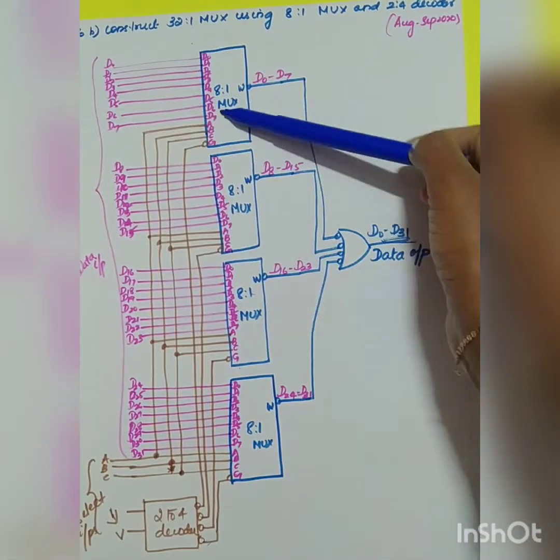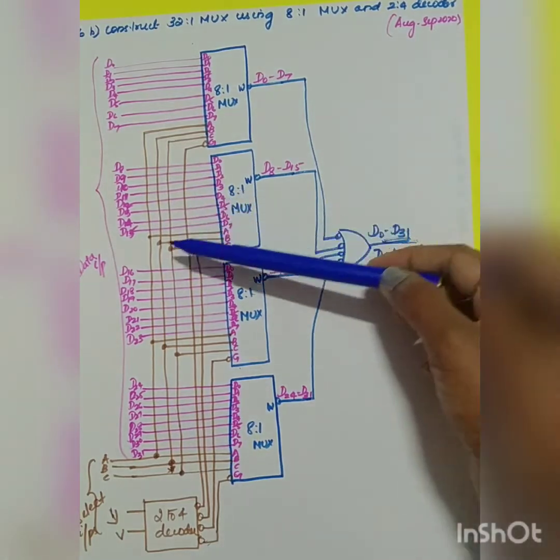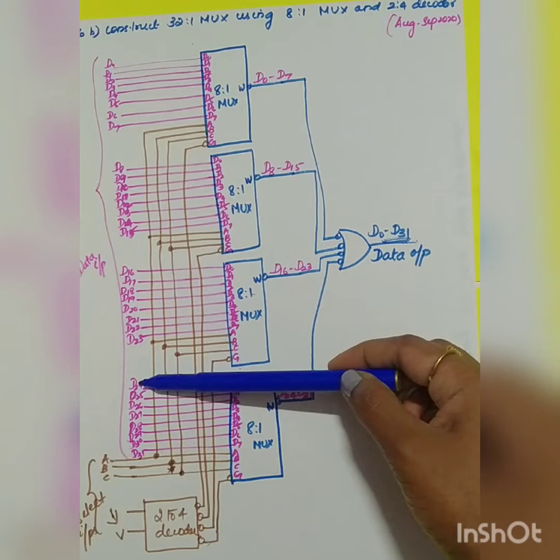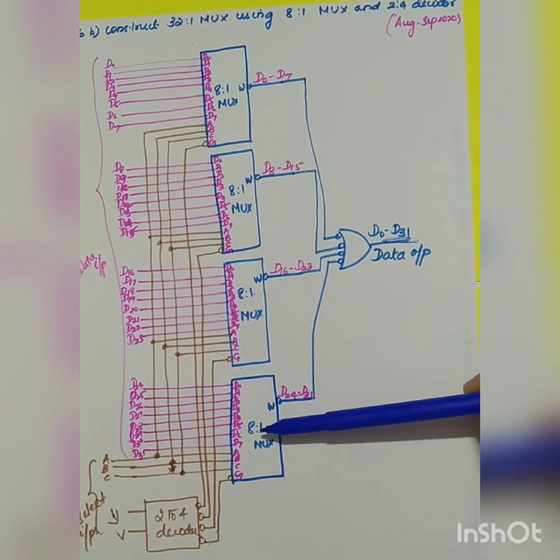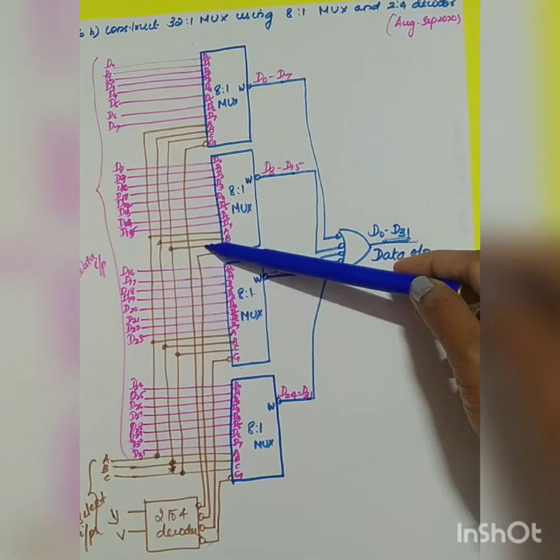d8 to d15 will be your data input to the second MUX, d16 to d23 will be the data input to the third MUX, and d24 to d31 will be the data input to the fourth MUX. A, B, C will be the select lines to each 8-to-1 MUX.